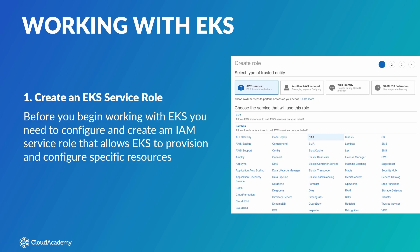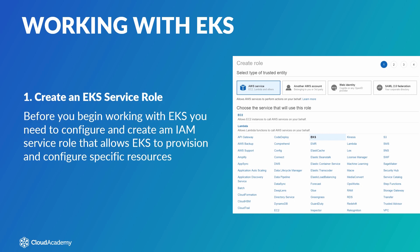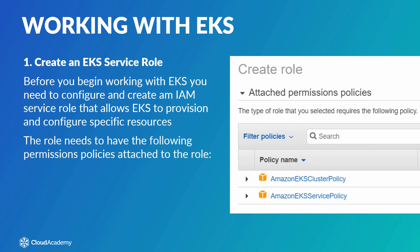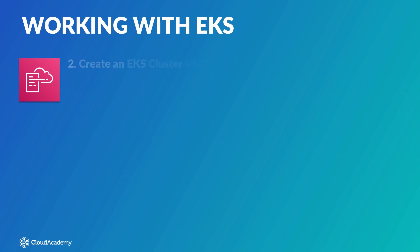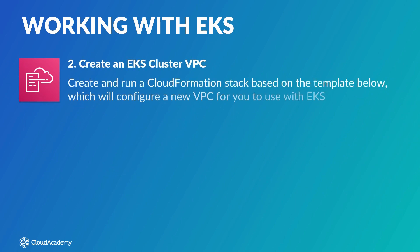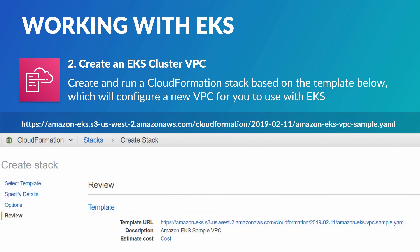This role needs only to be created once and can be used for all other EKS clusters created going forward. The role needs to have the Amazon EKS service policy and the Amazon EKS cluster policy attached. Next, you need to create an EKS cluster VPC. Using AWS CloudFormation, you need to create and run a CloudFormation stack based on the provided template, and this will configure a new VPC for you to use with EKS.